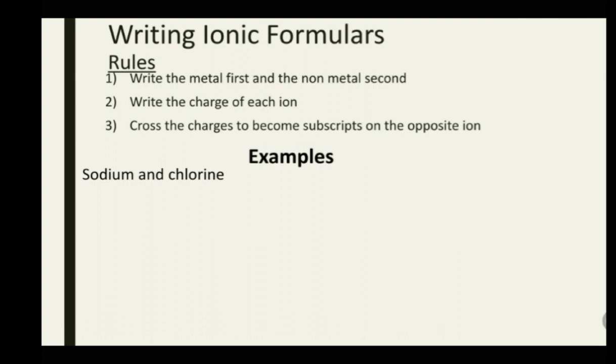Writing the metal first, sodium is the metal and chlorine is the non-metal. The charge of sodium is +1 (a Group 1 element) and chlorine is -1. Crossing them, they become subscripts on the opposite ion, so Na gets a subscript of 1 and Cl gets a subscript of 1. Anytime you get a compound where subscripts are 1, the 1 is ignored — so we get NaCl.